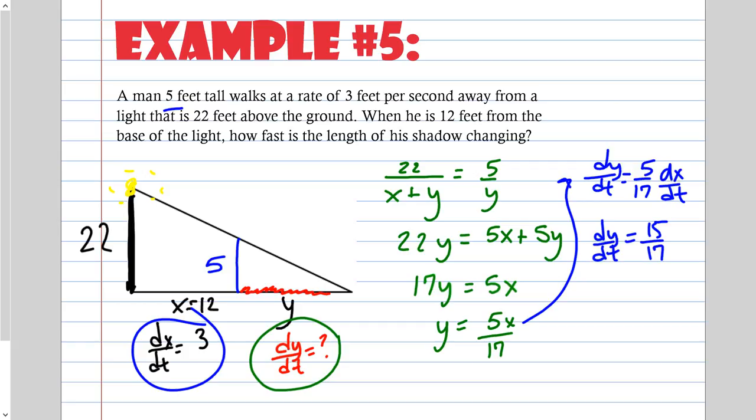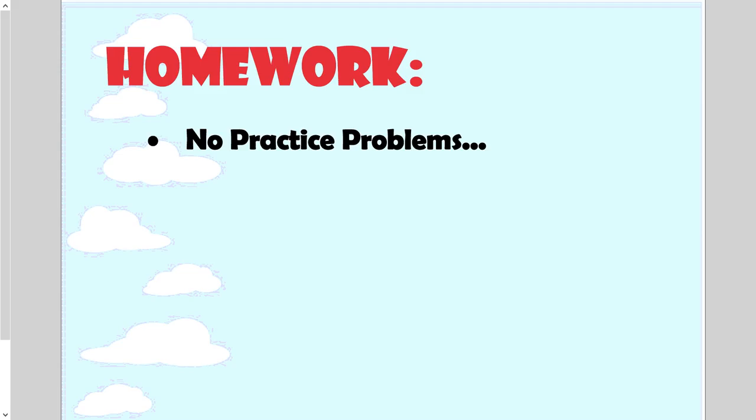Example 5: A man 5 feet tall walks at 3 feet per second away from a light 22 feet above the ground. Setting up the proportion: 22 over (x plus y) equals 5 over y. Cross-multiplying: 22y equals 5x plus 5y, so 17y equals 5x, giving y equals 5x/17. Deriving: dy/dt equals (5/17)(dx/dt). Plugging in dx/dt equals 3: dy/dt equals 15/17 feet per second. That's how fast the shadow length is changing.